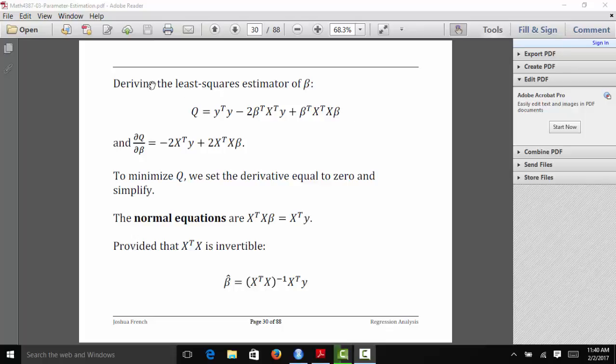We want to solve for beta because we're trying to find the beta that minimizes this Q function, this objective function. Provided that x transpose x is invertible, we multiply both sides by the inverse of x transpose x. We're left with beta on this side, and then we get x transpose x inverse x transpose y on the other side. So our solution for beta hat is beta hat equals x transpose x inverse times x transpose y. This is the ordinary least squares estimator of beta in a multiple regression context.